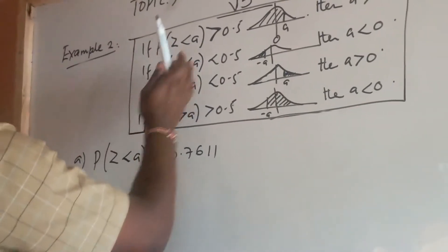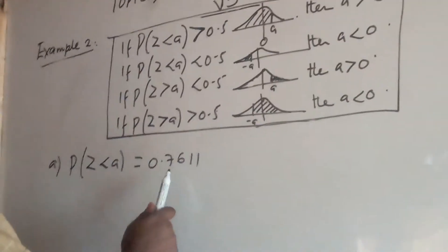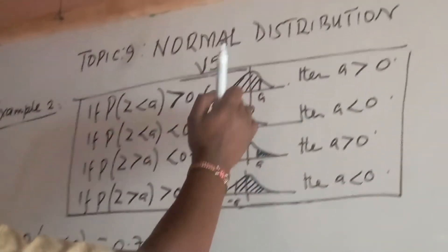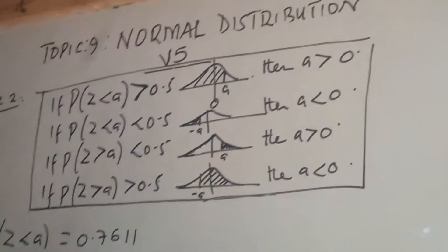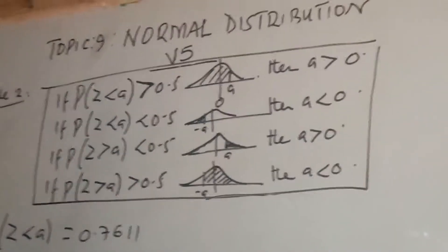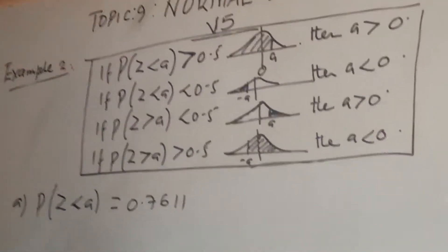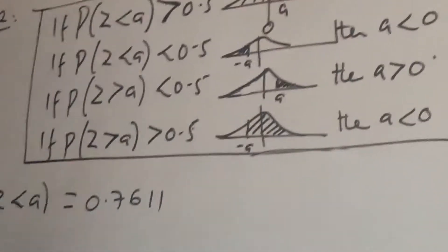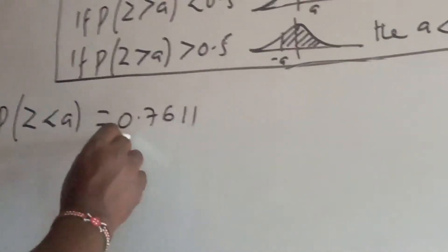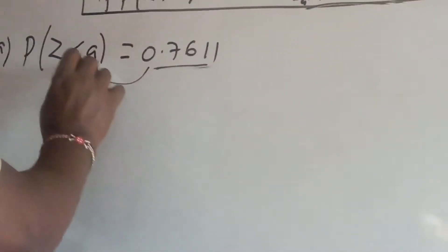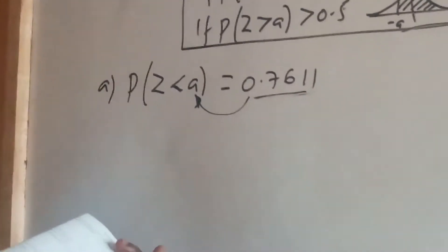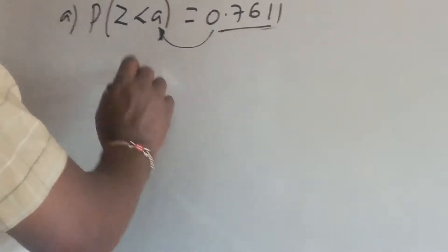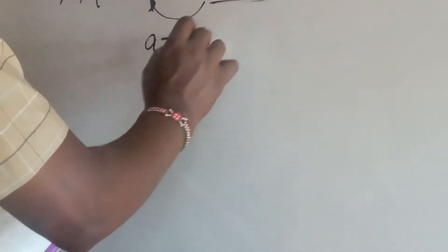The area of the region to the left of A is greater than 0.5 because this is 0.7. That means we have A to the right of 0, and A is positive. Going directly to the table on page 201, we look for 0.7611 so that we can find the corresponding boundary. The boundary from the table is 0.71, and that is the value of A.